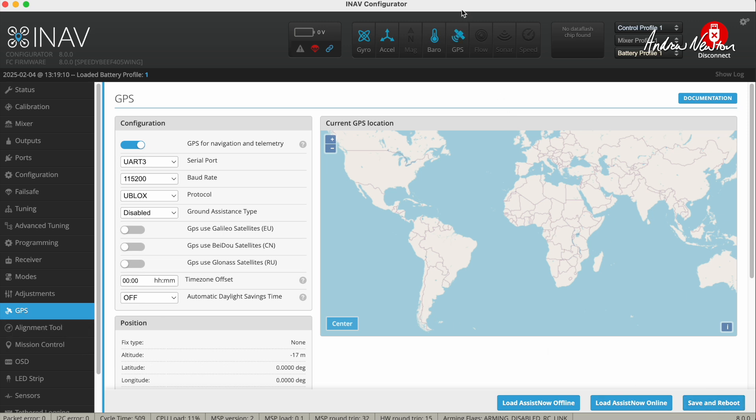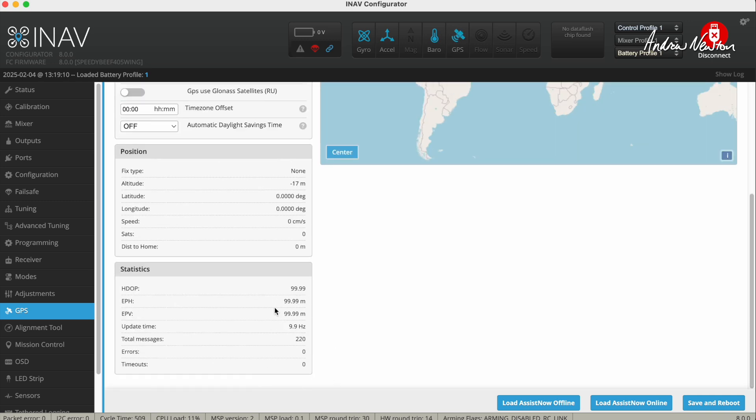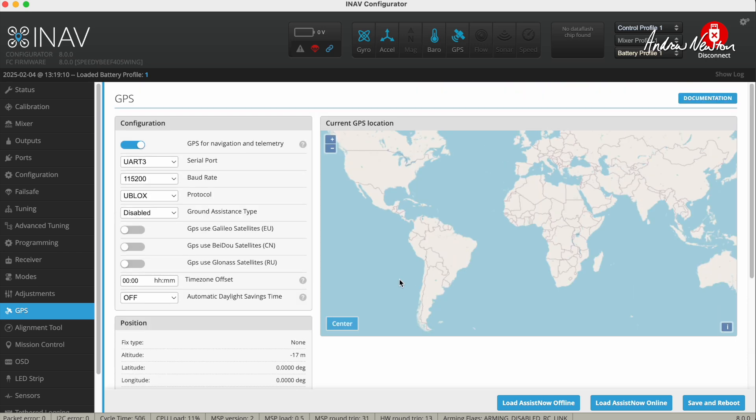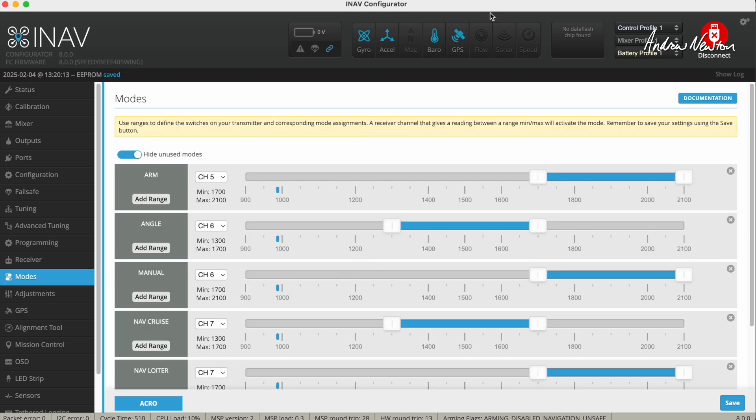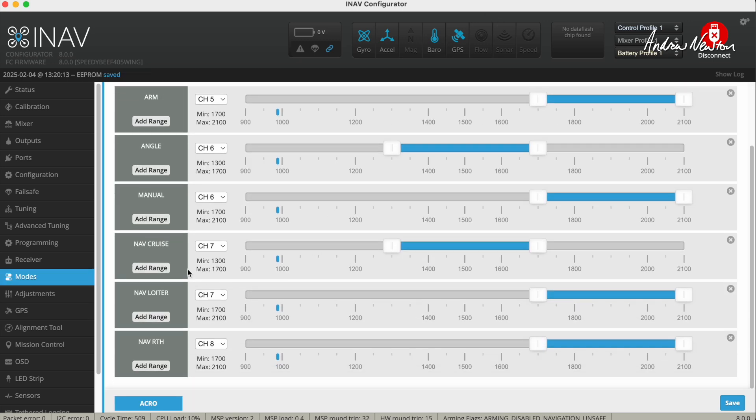I needed to save and reboot that so that the little blue icon shows up here, shows that the GPS is working. We can see numbers ticking over here so we know that it's all working, just waiting to acquire enough satellites to give us a 3D lock. Now with the GPS selected and working, you can have some nav modes like cruise, loiter, and return to home. It's important to know that you can't arm with any of these nav modes selected. You must have them all disabled and you can only arm in acro, angle, or manual mode.